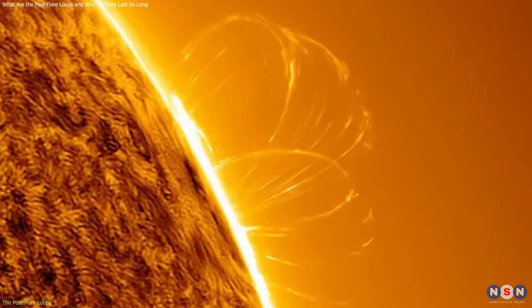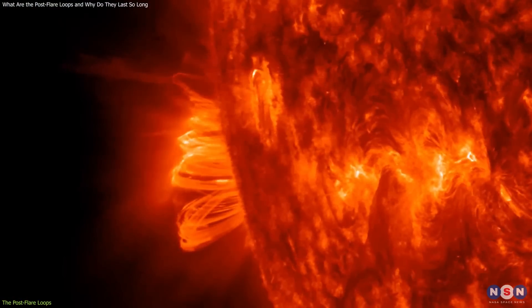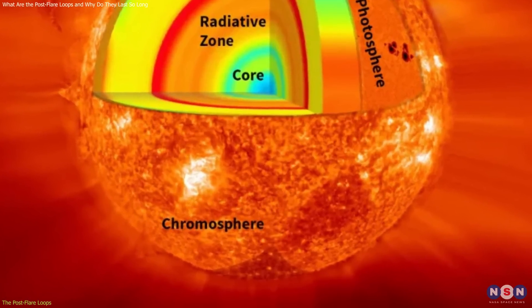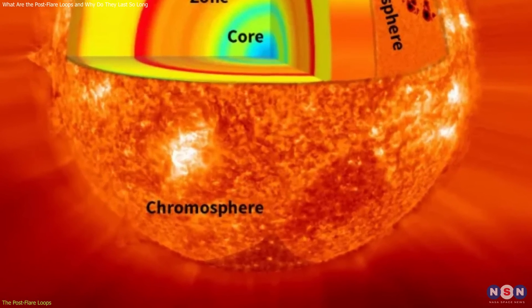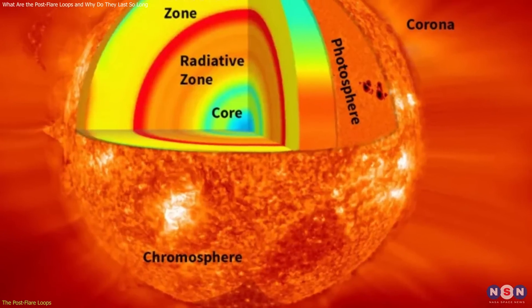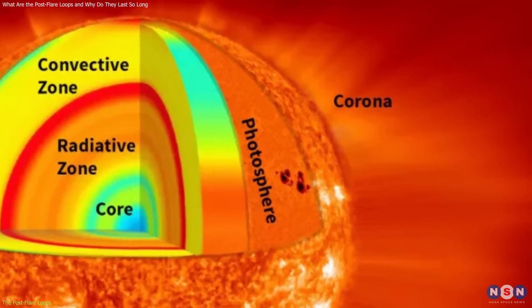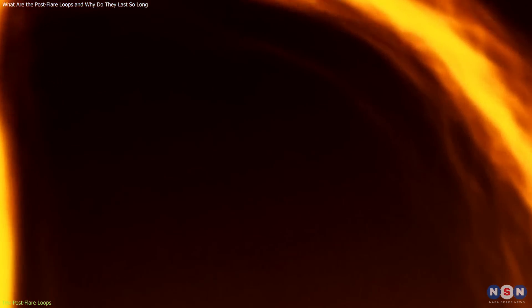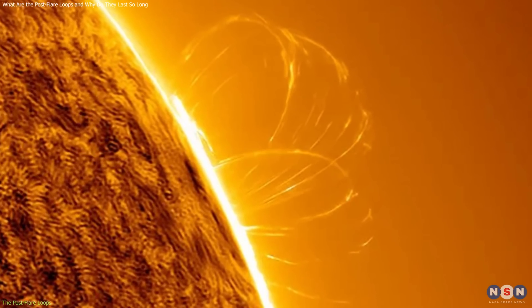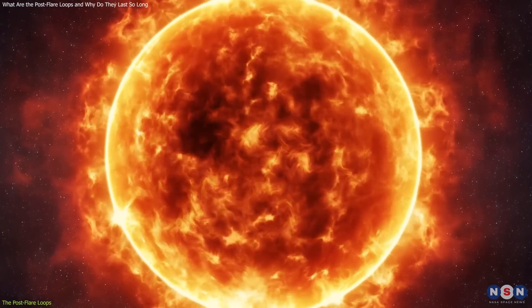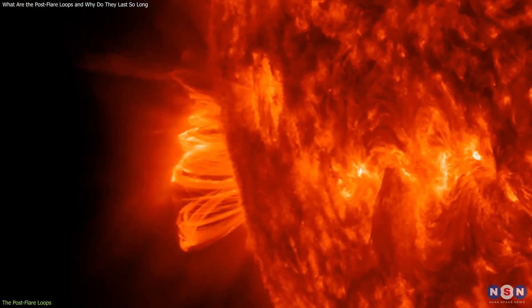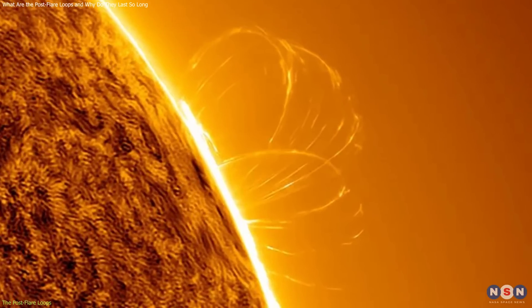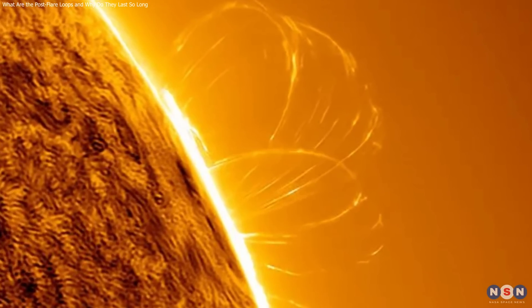Another possible explanation is that they are the result of chromospheric evaporation, which is a process that occurs when the sun's lower atmosphere, called the chromosphere, is heated by the flare and expands into the upper atmosphere, called the corona. This can create a surge of plasma that fills the magnetic loops that were already present before the flare. Both of these explanations are plausible, but they are not conclusive. Scientists need more observations and simulations to test and refine their theories. The post-flare loops are a fascinating puzzle that challenges our understanding of the sun and its dynamics.